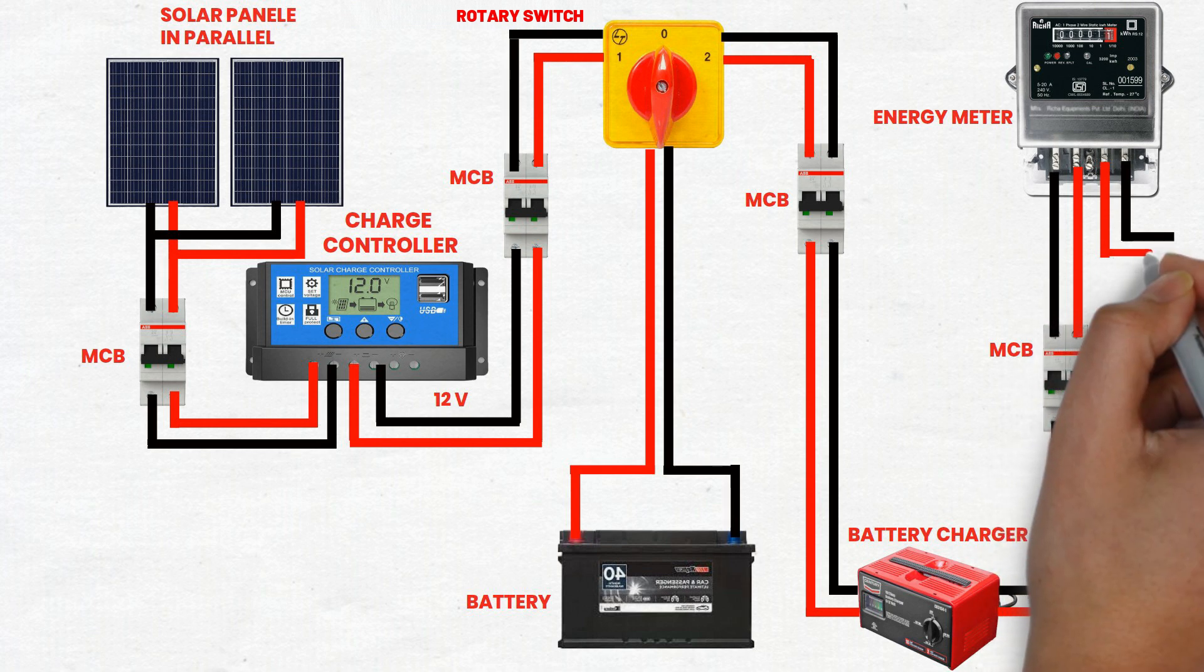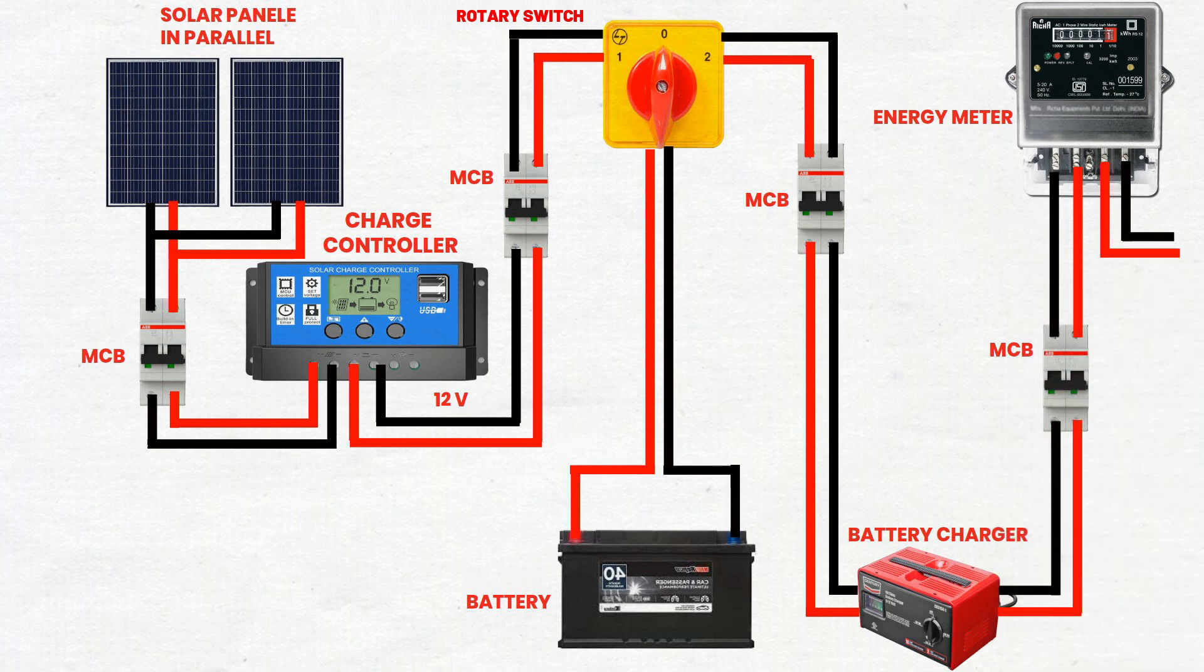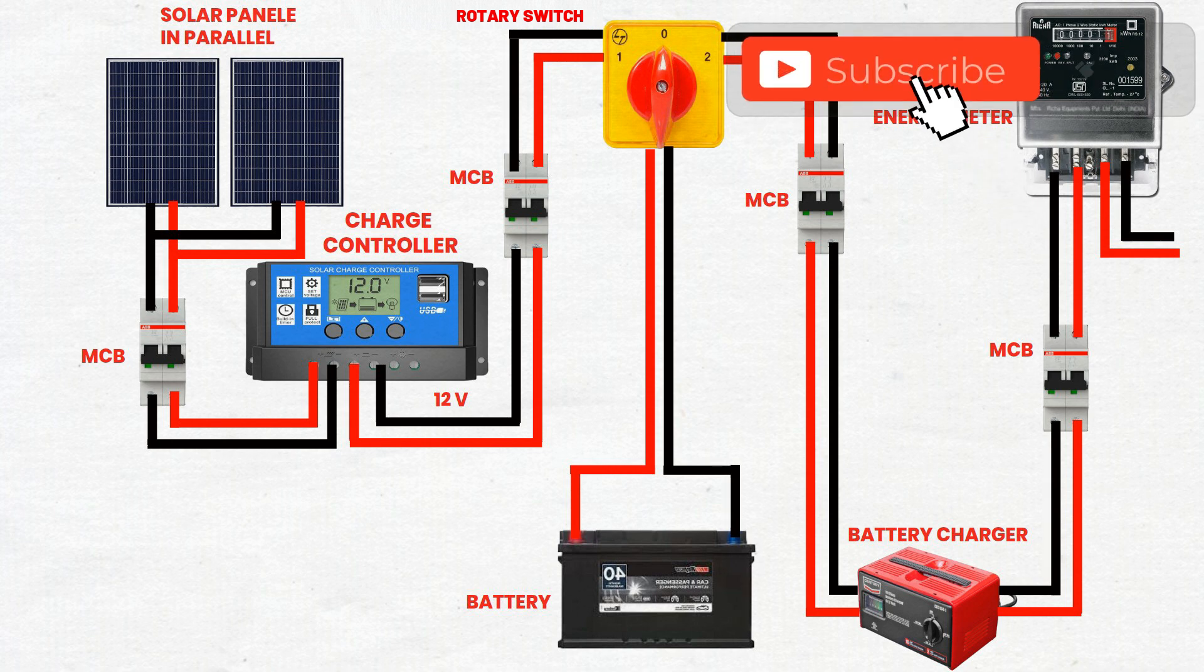Safety tips: Always turn off all MCBs before making or altering any connections to prevent electrical shock or damage. Double-check all connections for correct polarity, positive to positive, negative to negative, to avoid damaging components. Ensure all cables are of appropriate gauge to handle the current without overheating. Use components that are properly rated for your system's voltage and current to avoid overloading. Consult with a professional electrician if you are unsure about any step to ensure safety and correctness.